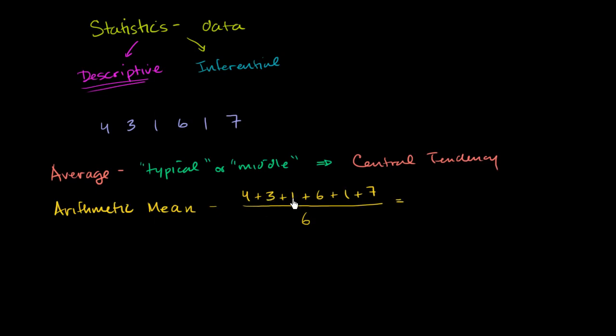and we get 4 plus 3 is 7, plus 1 is 8, plus 6 is 14, plus 1 is 15, plus 7 is 22. Let me do that one more time. You have 7, 8, 14, 15, 22. All of that over 6.